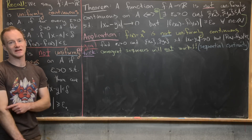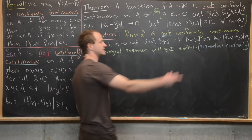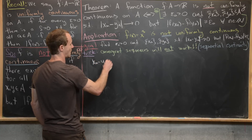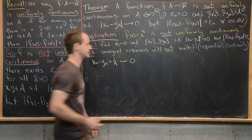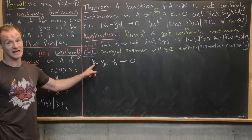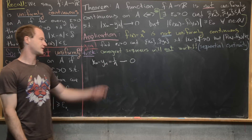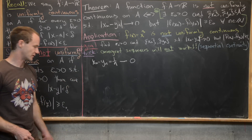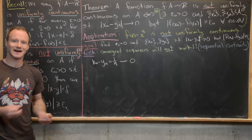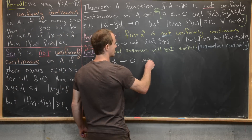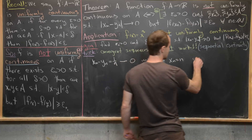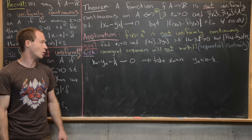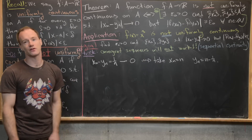Going for the lowest-hanging fruit, we want |xn − yn| = 1/n, which clearly converges to zero. Take xn = n and yn = n − 1/n. Then xn − yn = 1/n → 0, and neither sequence converges. Now we check whether plugging these into f(x) = x³ gives a difference always bigger than or equal to some fixed epsilon-naught.